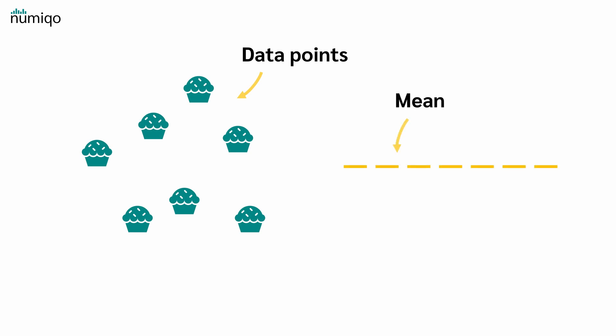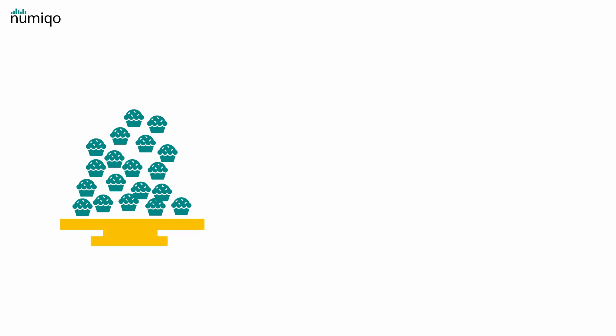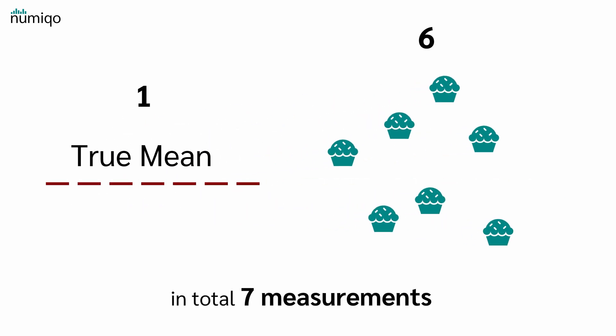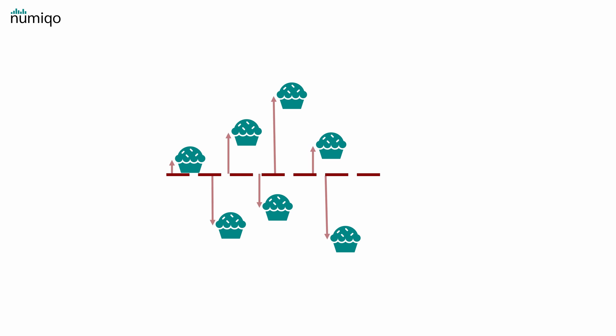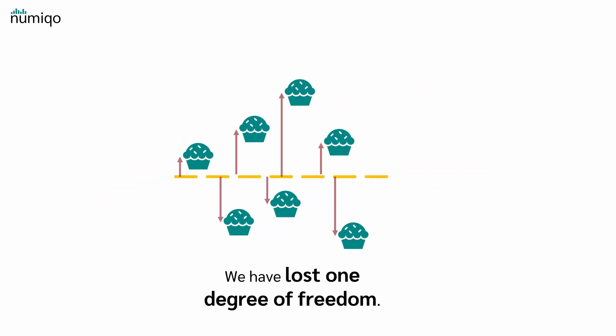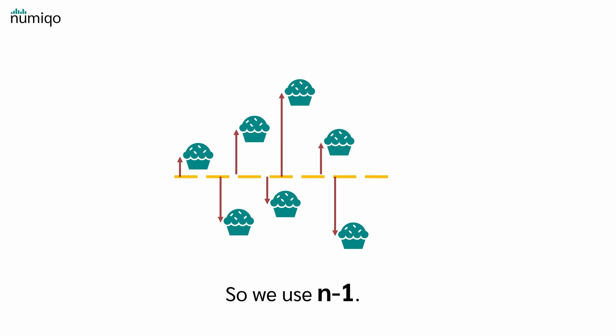To sum it up: to calculate the standard deviation, we need data points and a mean. If we take all the muffins and weigh them together, we can calculate the true mean weight. And if we also measure six muffins separately, we have seven measurements in total — the true mean and the six muffins — and from each of the six muffins we get an independent deviation from the mean. But if we don't measure the true mean and instead use the sample to calculate the mean, we don't have six truly independent deviations — we have lost one degree of freedom. So we use n-1.